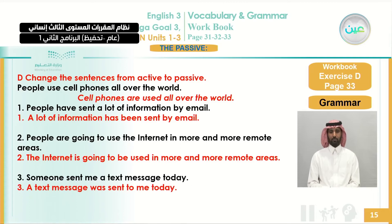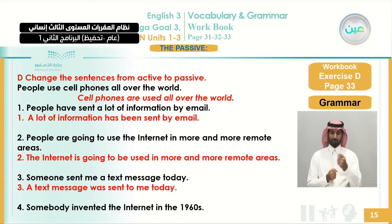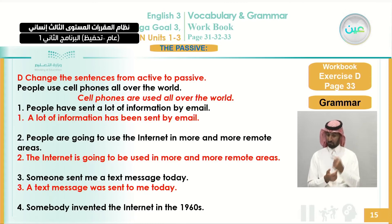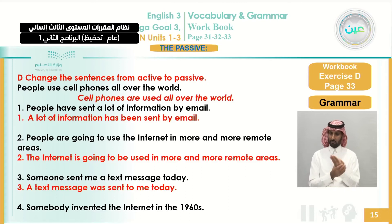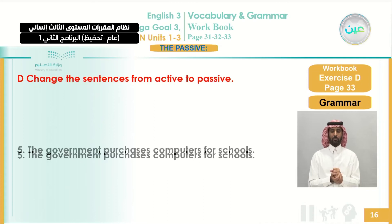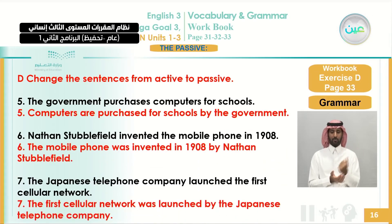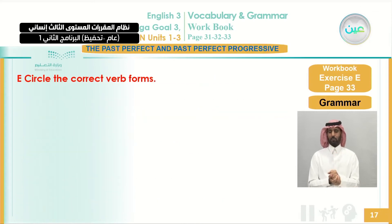You can try number three yourself. For number four: somebody invented the internet — decide where the object is, what tense is used, and use the verb be in the right form. The model answers for five, six, and seven are provided. You can do this on page 33 in your workbook.